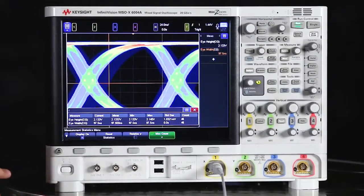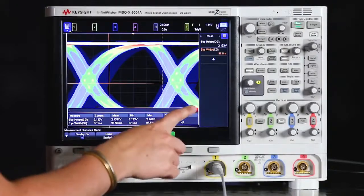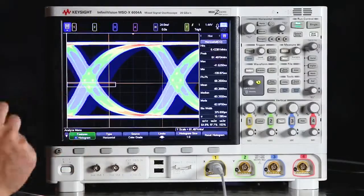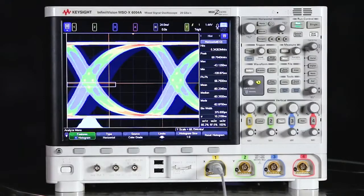And we can learn more information from this eye by really quickly bringing up a histogram. To do that we just draw a box on the screen and select histogram. So what does this histogram actually mean? Well you'll have to find out in the next episode.